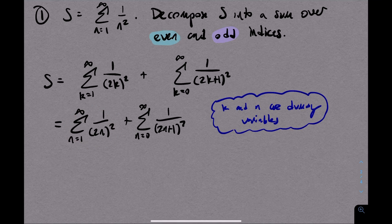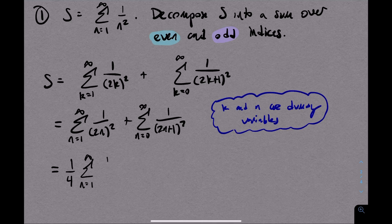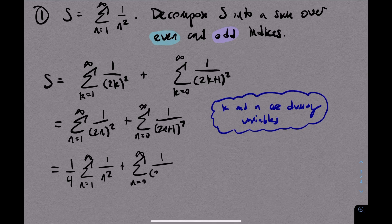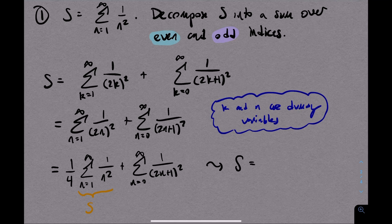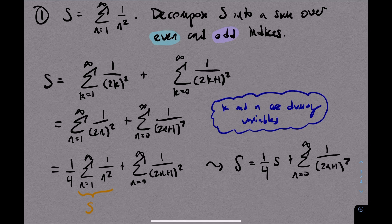Notice that in this term, we have a 2 squared in the denominator. That's a factor of 4 that I can just pull out. And then notice that when I do that, we get 1 fourth times the sum from 1 to infinity of 1 over n squared. That's the original sum that we care about. So this decomposition turns into an algebraic equation involving s.